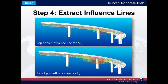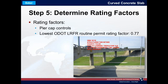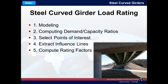Following the procedure, the next step is to extract influence lines. Here are two influence lines affecting the demand-capacity ratios of the pier and pier diaphragms: the top image shows the influence line for maximum out-of-plane bending at the top of the pier, while the lower image shows the influence line for maximum compressive axial force at the top of the pier. With influence lines extracted and vehicles run over them, we apply the LRFR equation. For this bridge, the pier cap diaphragms controlled the rating — the lowest ODOT routine permit rating factor was 0.77.